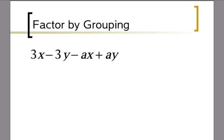Now we're going to move into what's called factoring by grouping — this is our last type of factoring. It's similar to the examples I was doing, where I was factoring out a binomial. You're going to see that when we cut this problem in half. I draw a line right down the middle.